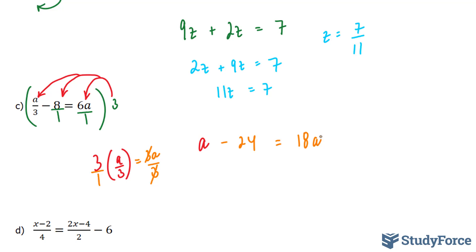Now all we have to do is solve for a. I'm going to bring all the a terms to one side. So I'm going to take this over, and I end up with -24 = 18a - a. The right side equals 17a. The left side stays the way it is. And therefore, a = -24/17. That is the solution to this question. Finally, let's move on to part D.